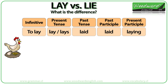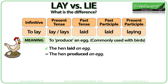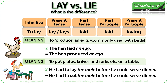LAY also has a couple more meanings. Did you know that birds lay eggs? Yes — LAY also means to produce an egg. This verb is most commonly used with birds such as hens or chickens. You can also lay a table, which means to set a table or put plates, knives and forks, etc. on a table. He had to lay the table before he could serve dinner — this is the same as saying he had to set the table before he could serve dinner.